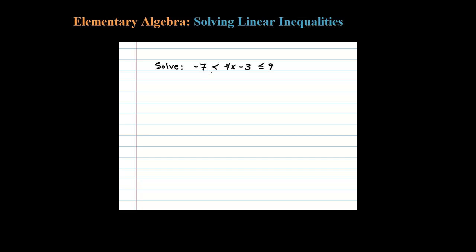Here I'm asked to solve what's called a compound inequality. In reality we have two inequalities in one: negative 7 is less than 4x minus 3, and at the same time 4x minus 3 is less than or equal to 9.